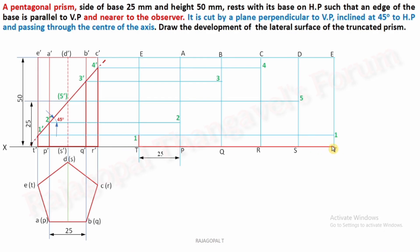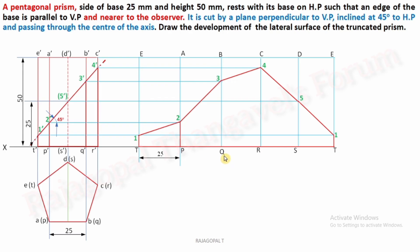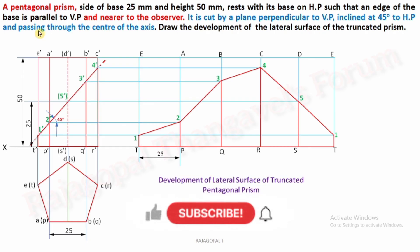Now we can complete the development from the base — it is a completely visible thick line. Then join T to 1, 1 to 2, 2 to 3, 3 to 4, 4 to 5, 5 to 1, and 1 to T. Convert all the visible remaining longer edges to thick lines: P to 2, Q to 3, R to 4. In between these longer edges, draw everything as a thick line. The topmost portion is the removed part of the solid; the bottom is the remaining portion. This is the final development of the lateral surface of the truncated pentagonal prism.